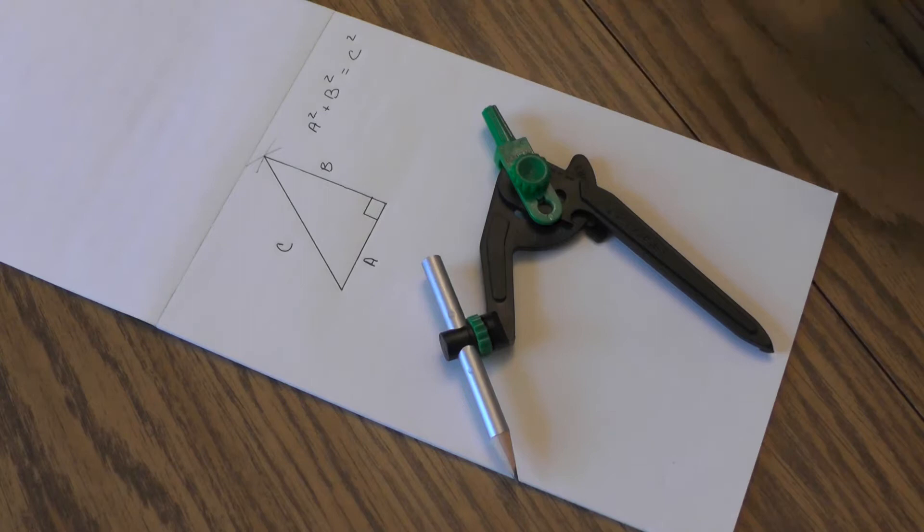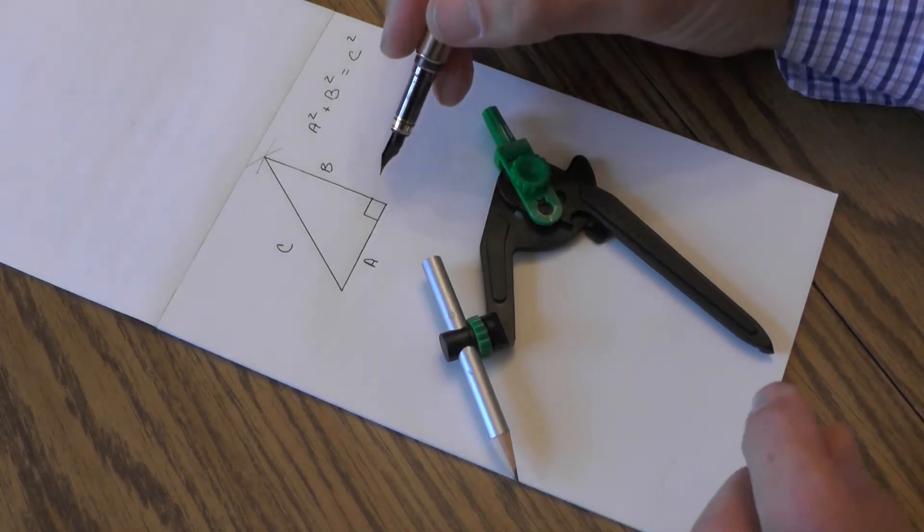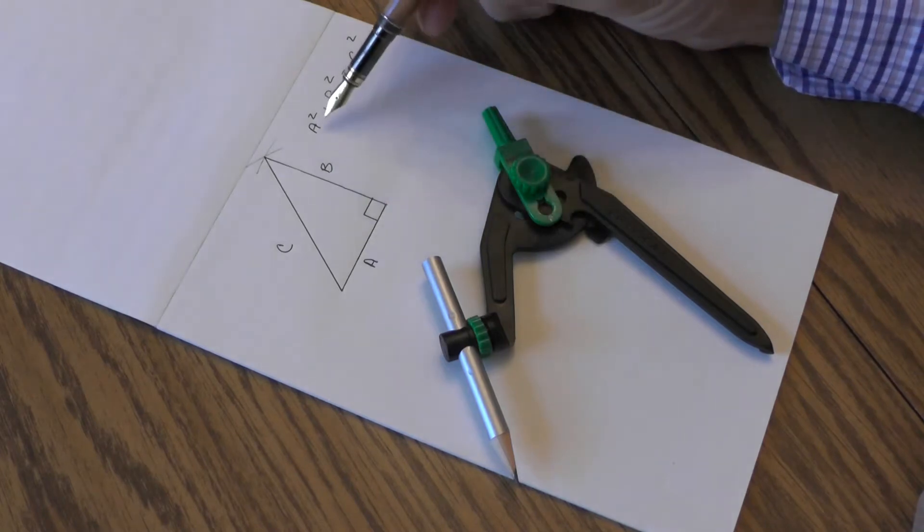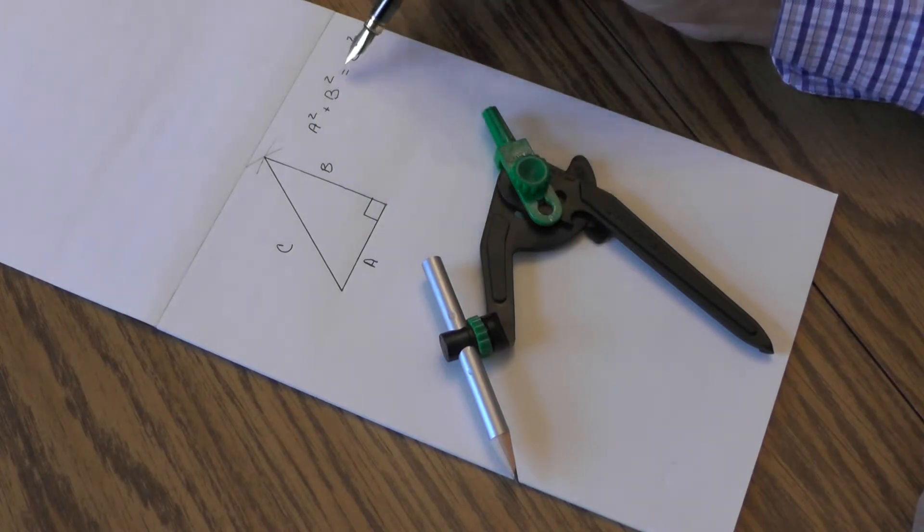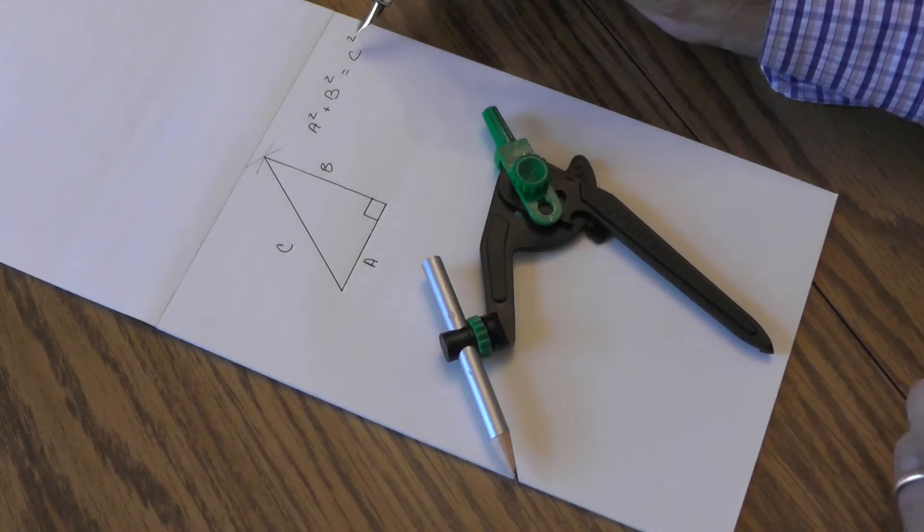And what Pythagoras discovered is that if you had a triangle with a 90 degree angle, then the square of side A plus the square of side B is equal to the square of side C.